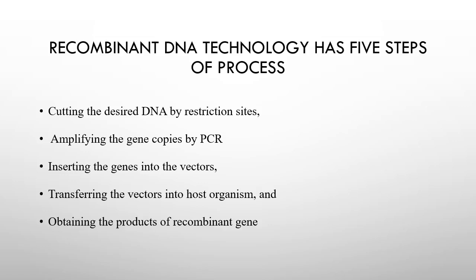The third step is inserting the genes into vectors. Vectors are used for the insertion of genes, and we will talk about them in detail in further slides. The fourth step is transferring the vectors into host organisms, and the fifth step is obtaining the products of the recombinant gene. A recombinant gene is one in which two genes, or two pieces of genetic material, are attached together in a single gene — that is why it is called a recombinant gene.